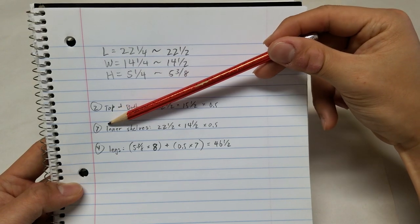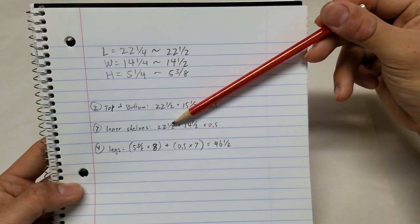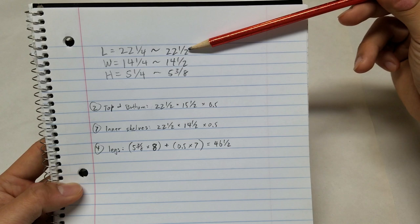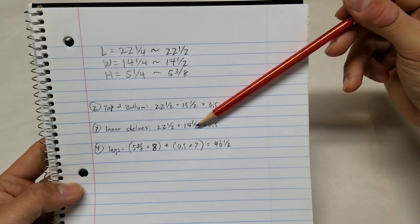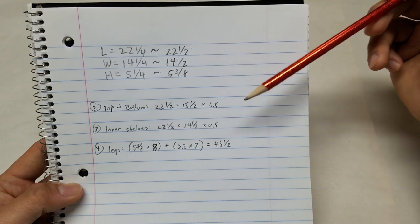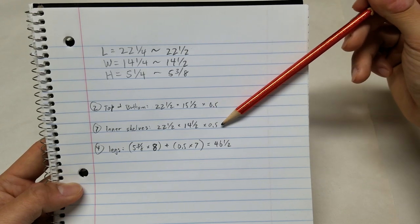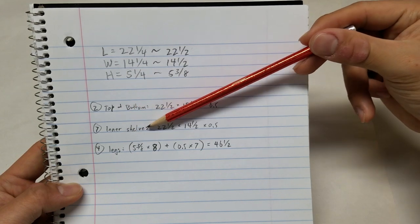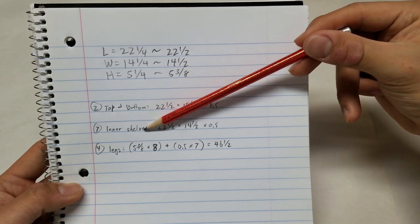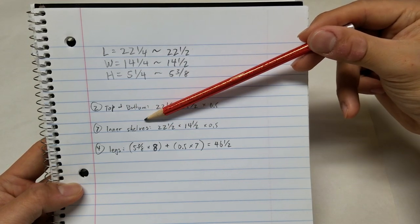For the inner shelves, the same length, 22 and a half. Now for the width, I've kept the 14 and a half. Again, we're using 1.5 inch PVC material. Now there's going to be 7 inner shelves plus the top and bottom. That'll give us slots for 8 tubs.